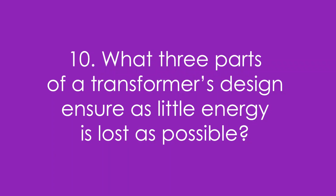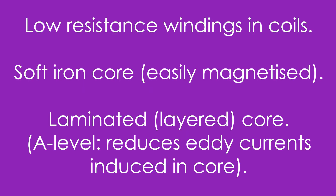Question 10: What three parts of a transformer's design ensure as little energy is lost as possible? We have low-resistance windings for the coils, a soft iron core which is easily magnetised and demagnetised, and a laminated or layered core. At A level, you should know the laminated core reduces eddy currents induced in the core.